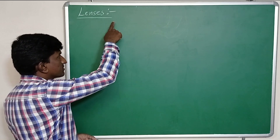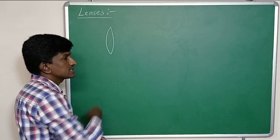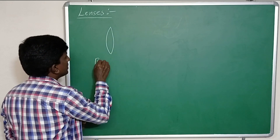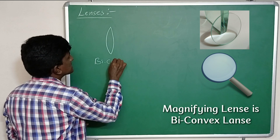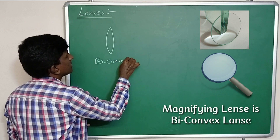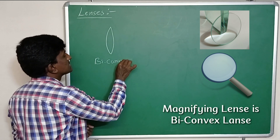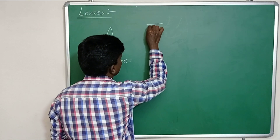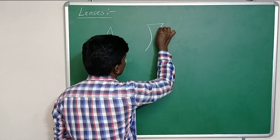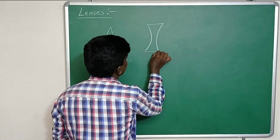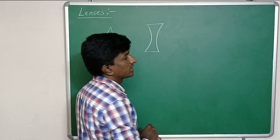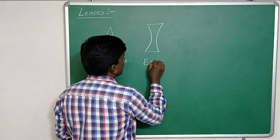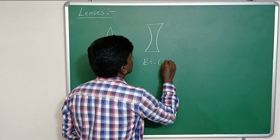Here, this transparent substance is made with glass and it has two curved spherical surfaces — convex surfaces. This is a lens and it is said to be a biconvex lens. If it is having two curved surfaces which are concave, then this lens is said to be a biconcave lens.